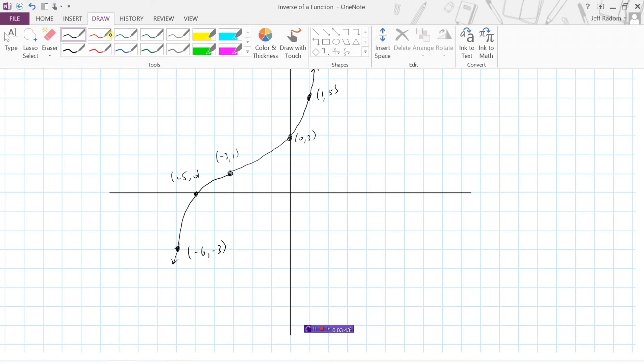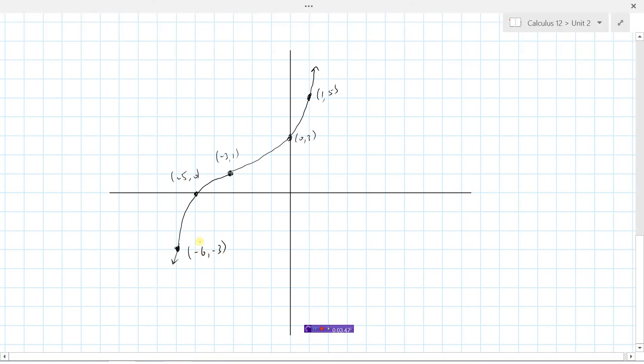Again, if we wanted to draw the inverse of this, we would simply switch their x and y values. So this was x and this is y. My new point is going to be (-3, -6) right here. This point that was (-5, 0) is now (0, -5). This point that's (-3, 1) is now (1, -3). This point here used to be (0, 3), now it's (3, 0). And this point was (1, 5), now it's (5, 1). And so we get a graph that looks like this. This here would represent the inverse of this function that we started with.